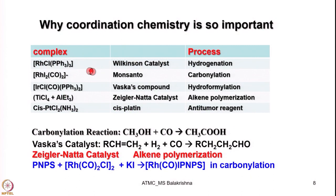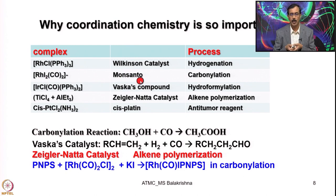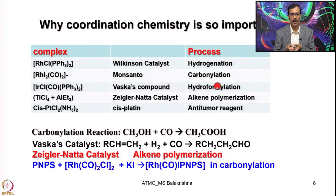Wilkinson catalyst is used in hydrogenation and several other organic transformations. This rhodium-iodo compound is used in the Monsanto company for carbonylation — the treatment of carbon monoxide — in which carbon monoxide is inserted to form acetic acid. The Vaska's compound, trans-iridium chlorocarbonyl bistriphenylphosphine, was used in hydroformylation, a reaction I have shown here.